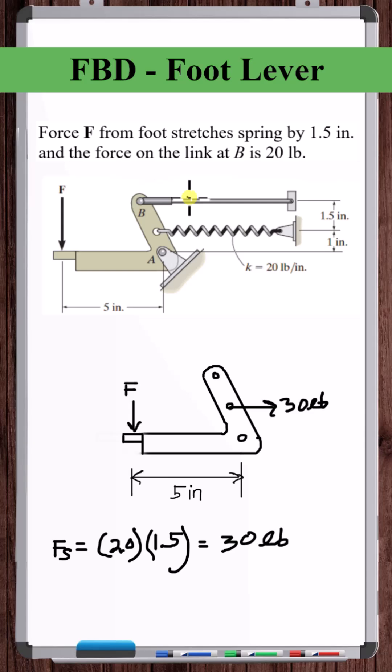It says the force in this link is 20 pounds. Based on the problem, the link must be pulling back in this direction. The force will be along the line of action of the link because the link is a two-force member.